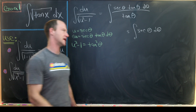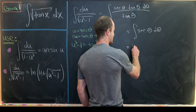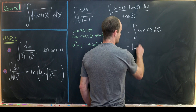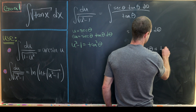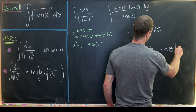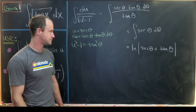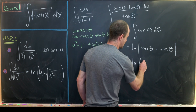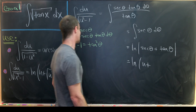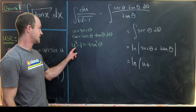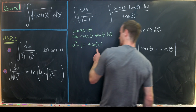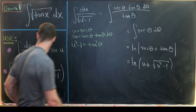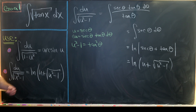The antiderivative of sec θ has a well-known — if a bit surprising — form: it's the natural log of |sec θ + tan θ|. Since sec θ = u and tan θ = √(u² - 1) from our identity, we get: ∫ du/√(u² - 1) = ln|u + √(u² - 1)|. That completes the derivation of our second rule.